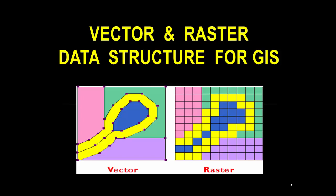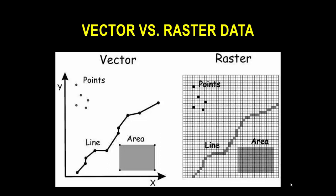Assalamu alaikum, welcome to Best Solution Line. This tutorial is about vector and raster data structures for GIS — different data structures used in GIS. In this lecture you will learn about these two data types: vector and raster data.